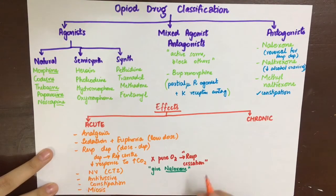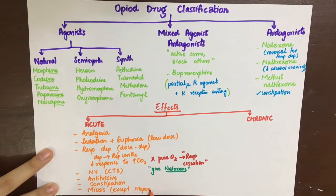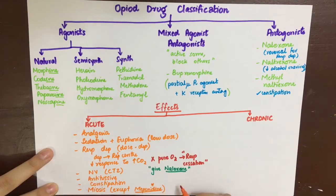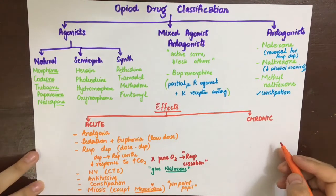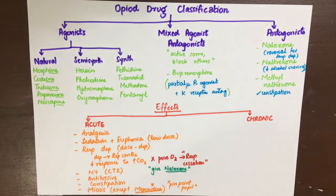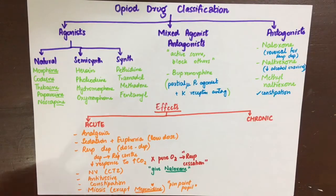Miosis is a characteristic of all opioids except meperidine. This effect is due to opioids decreasing norepinephrine, allowing acetylcholine to dominate in the eye, causing miosis. Pinpoint pupil is a characteristic sign of opioid poisoning, and the remedy includes naloxone and atropine.